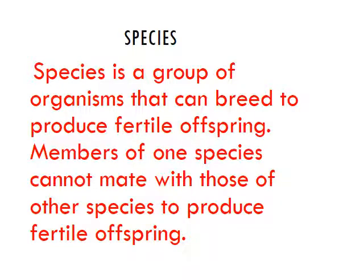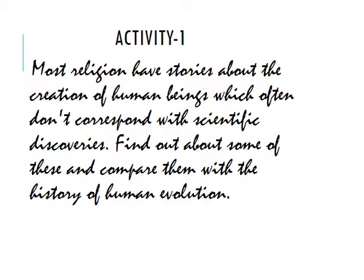A species is a group of organisms that can breed to produce fertile offspring. Members of one species cannot mate with those of another species to produce fertile offspring. Species are basically a group of organisms of the same kind — like mammals, birds, or reptiles.